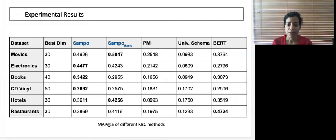We applied SAMPO to over 20 domains and closely examined the quality of six of the knowledge bases we constructed. We compared against three baseline systems: PMI, which essentially captures co-occurrences of opinions; the second baseline was universal schema, which also uses the matrix factorization method; and lastly BERT, which is a strong linguistic baseline for our system.